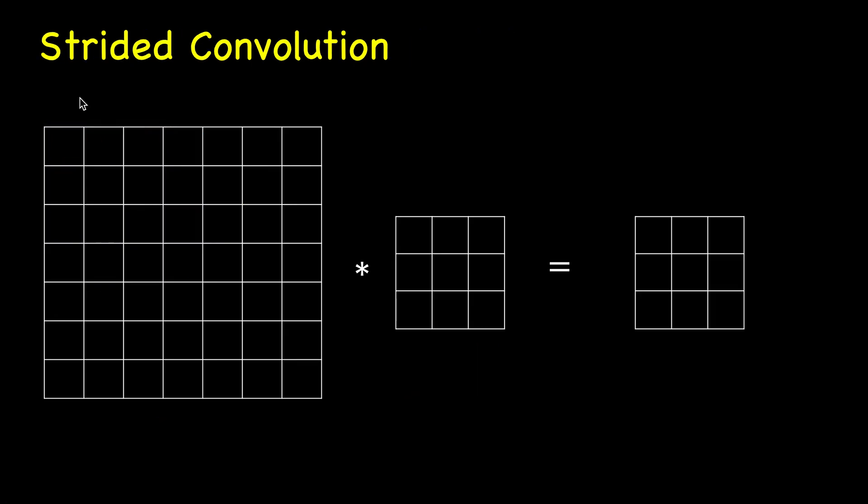Now we will add stride to it. So here the stride was 1, so implicitly there is stride here but it's 1 so we ignore it. So now that we have seen a stride let's do this again.